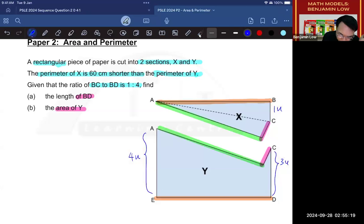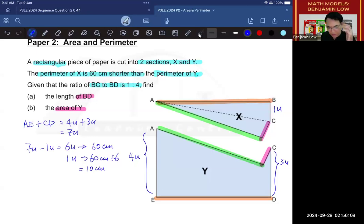Okay, so now we're going to write that out. We're going to say that AE plus CD. Okay, I basically took these two lines. I'm going to write it out as 4 units plus 3 units equals 7 units. And I know that this is 60 cm more than this line. So if I now take 7 units minus 1 unit, I will get 6 units. And the 6 units is 60 cm. This means that 1 unit would be 10 cm. Okay, this is how you can do a question really fast.